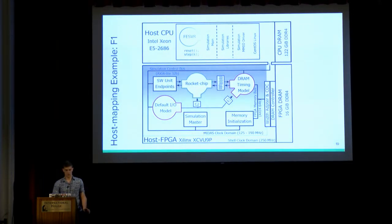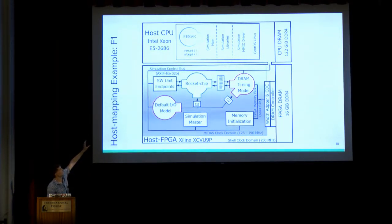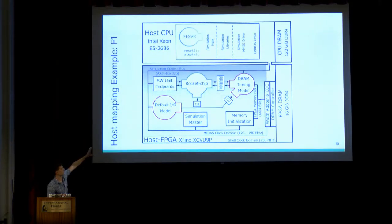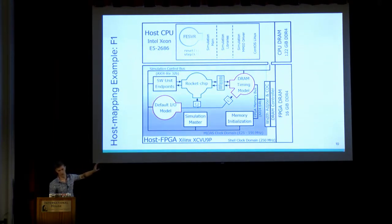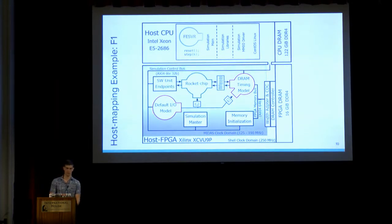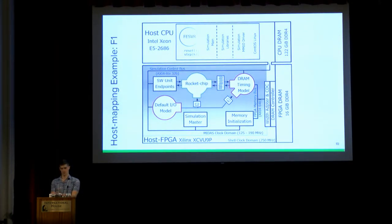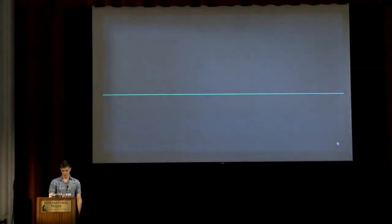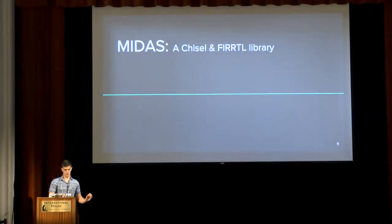The whole thing hosted looks something like this — here on AWS. You have a driver living on your host CPU with your software models controlling the simulator. All of the RTL models are hosted on the FPGA. The simulation control bus is how software interacts with the simulator and allows you to reconfigure it to explore a different point in design space without having to recompile the bitstream.